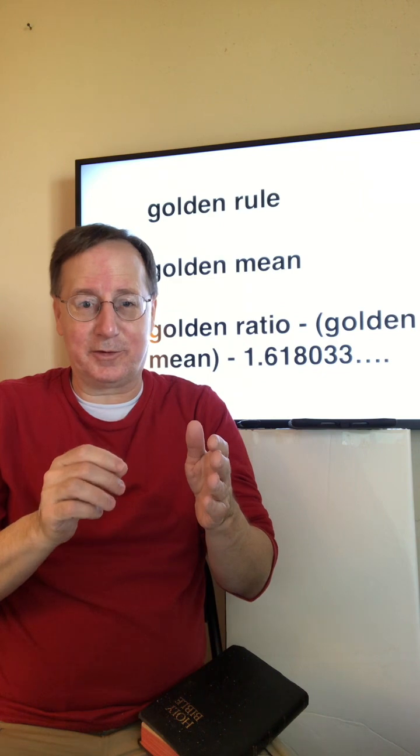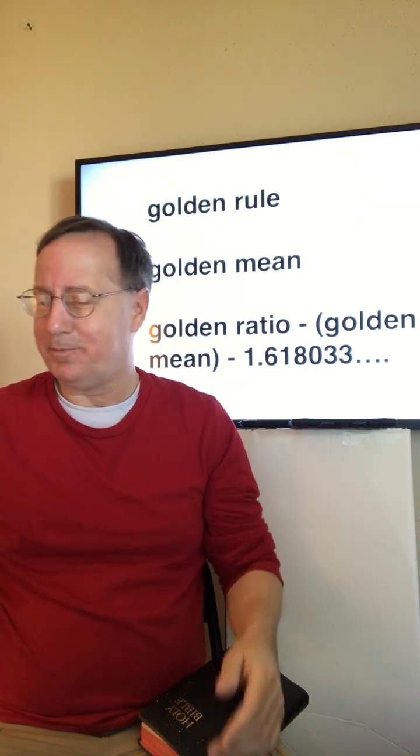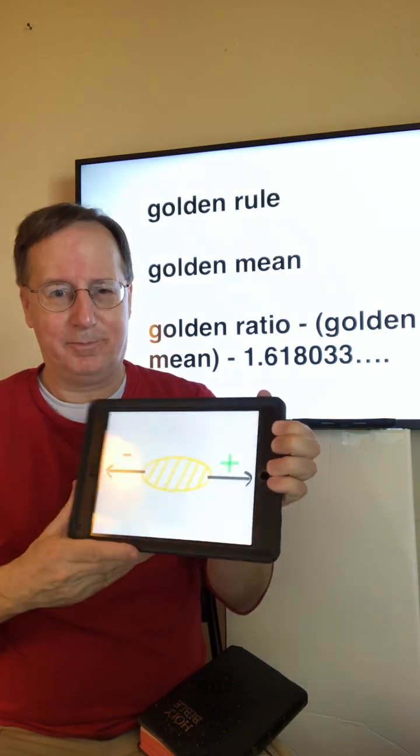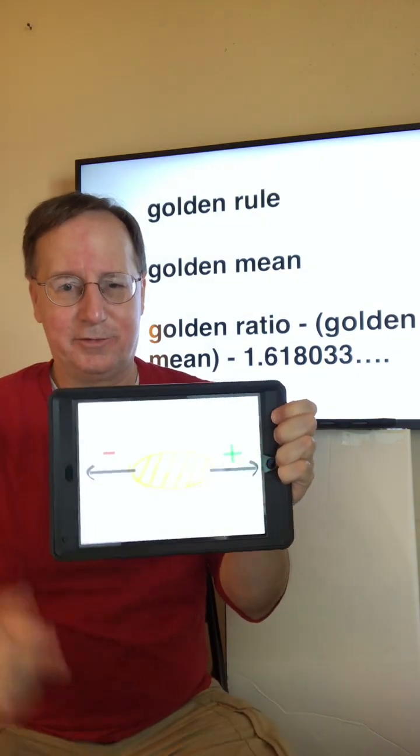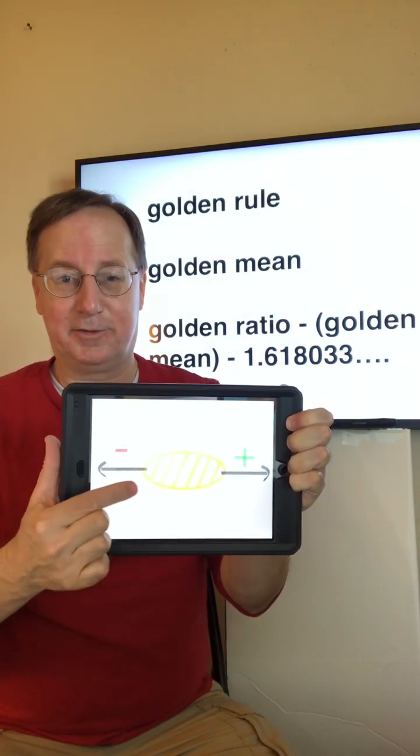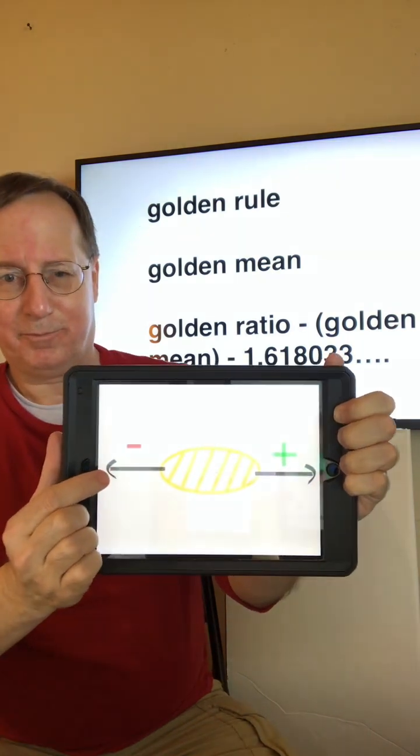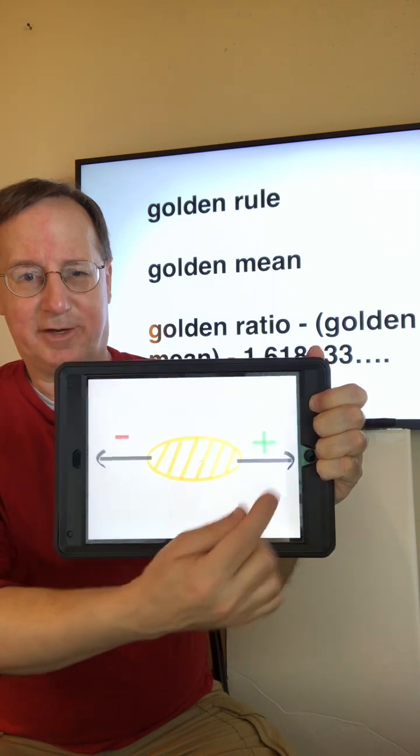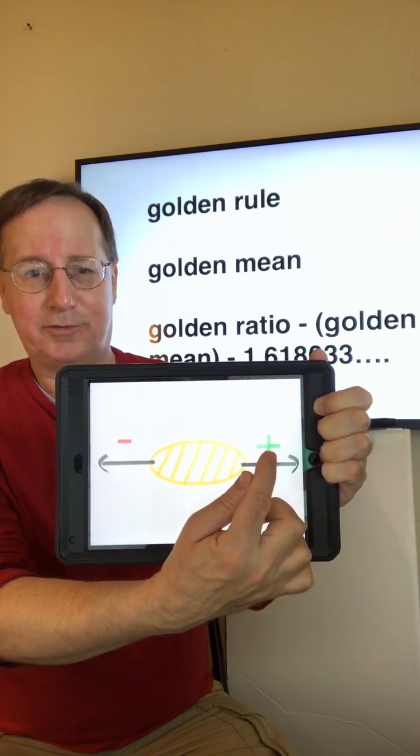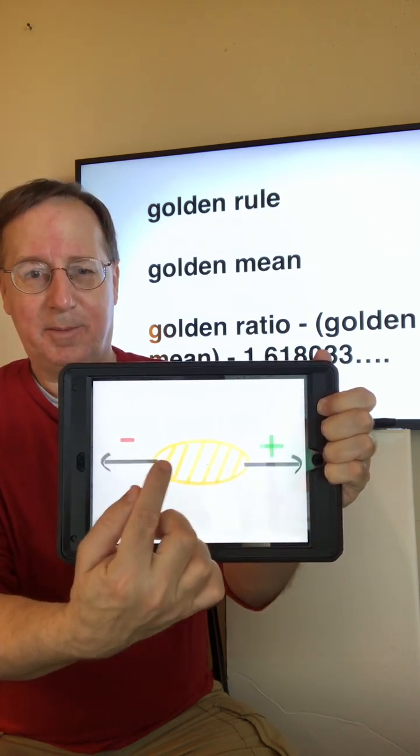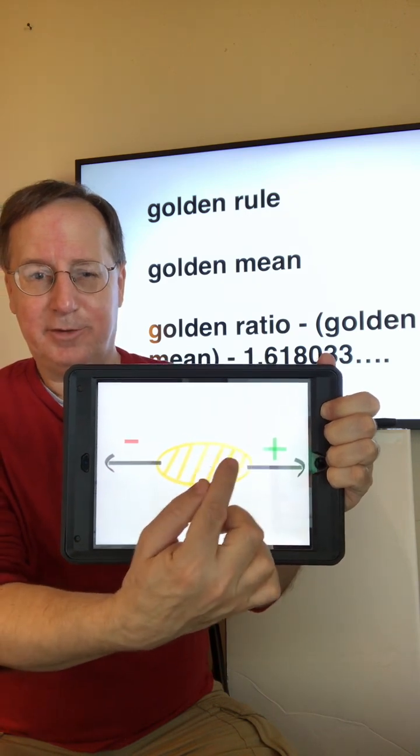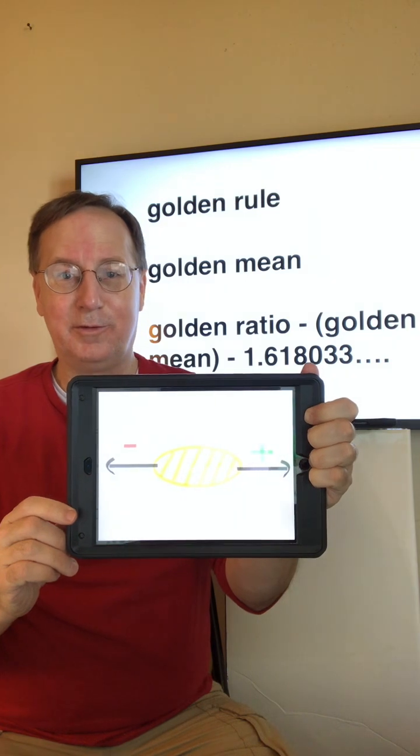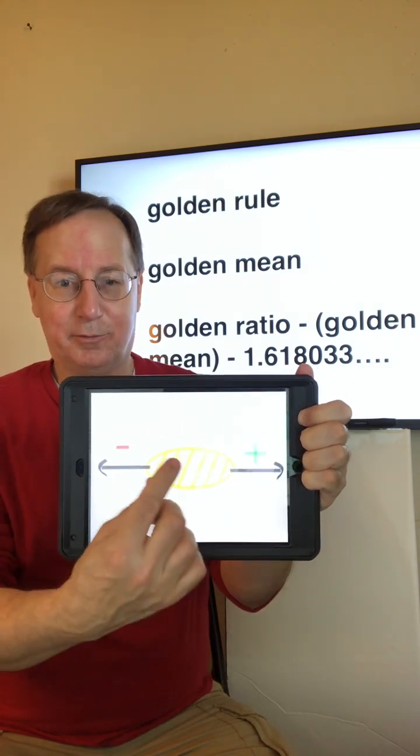To give you a picture example, here is a line of continuum. On this side, there is not enough, a minus. On this side, plus, too much. But right here in the middle, the middle of this continuum, is the Golden Mean, the right amount.